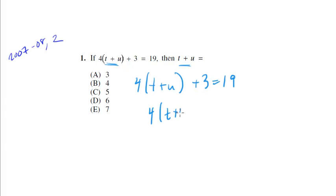So subtract 3 from both sides, we get 4 times t plus u equals 16, divide both sides by 4, and we're left with t plus u equals 4. So there you go, t plus u equals 4. We don't have to actually solve for t or for u individually, we just solve for t plus u.